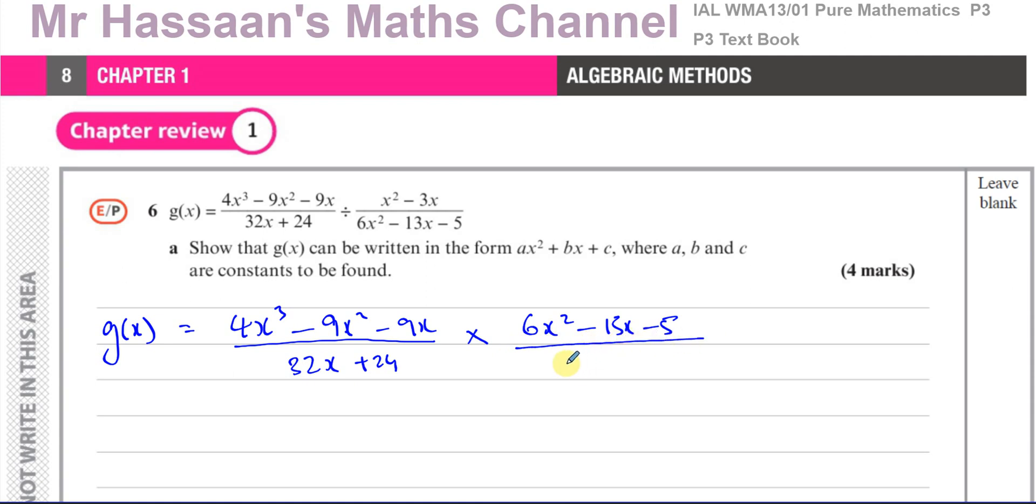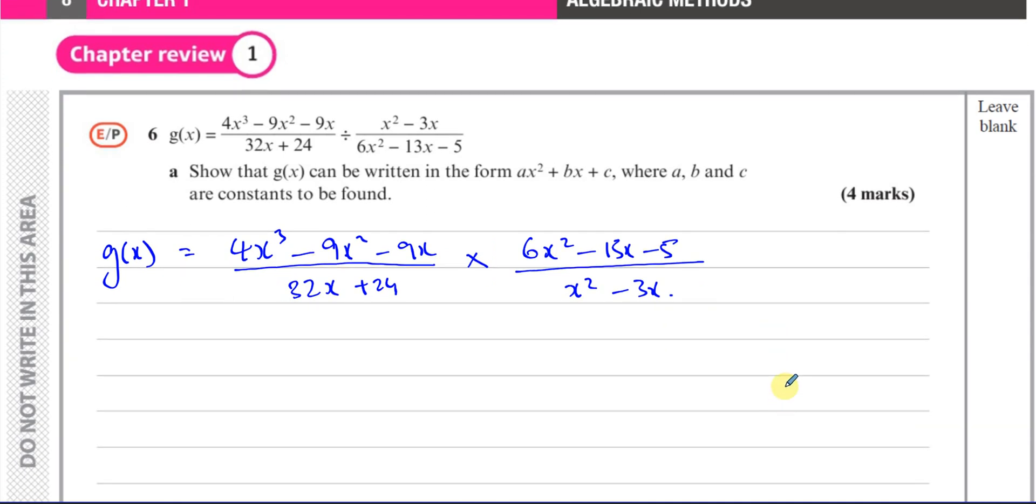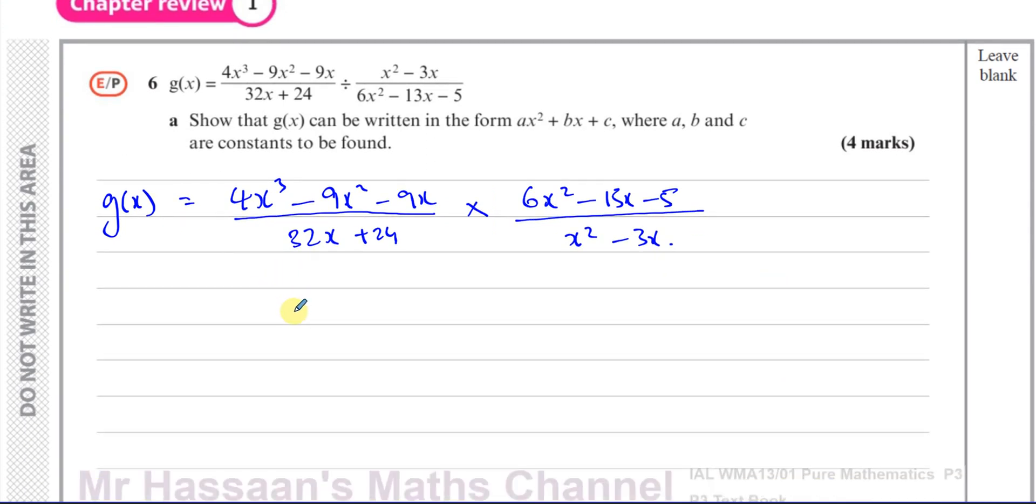Now, what I'm going to do is try to factorize everything as much as possible. I'm going to start off with this. I can see x is common, so I'll write x(4x² - 9x - 9). And here I've got 32 and 24. I think 8 is the highest common factor, so I'll write 8(4x + 3). Times, and this denominator is going to be x(x - 3).